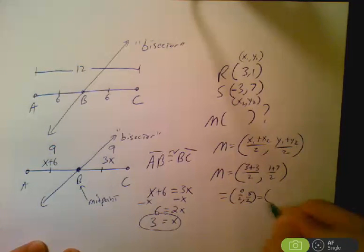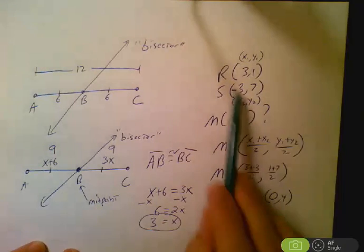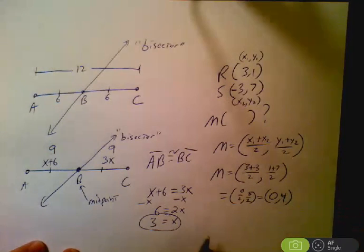And then last but not least, 0 over 2 is 0, 8 over 2 is 4. The midpoint of this segment is 0, 4.